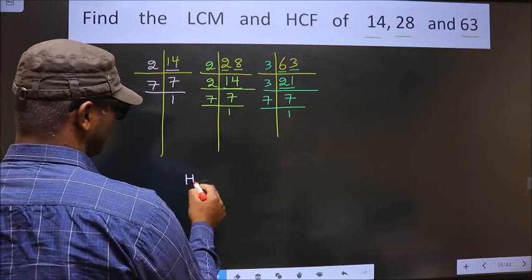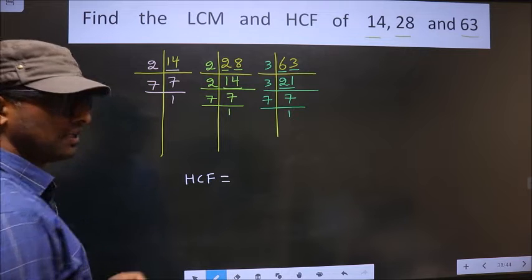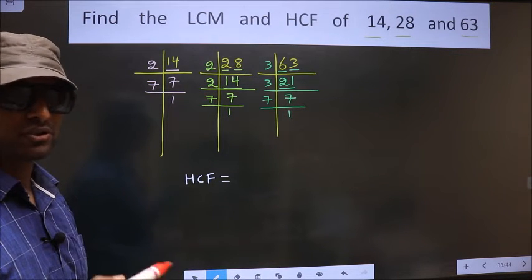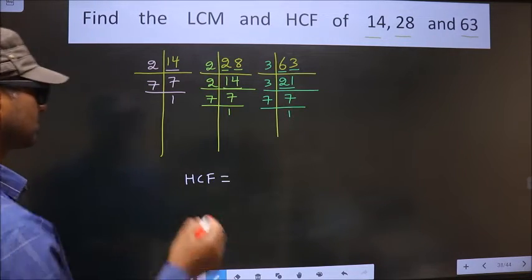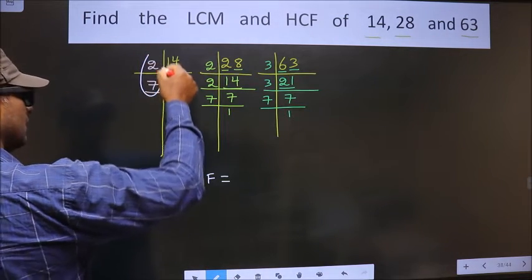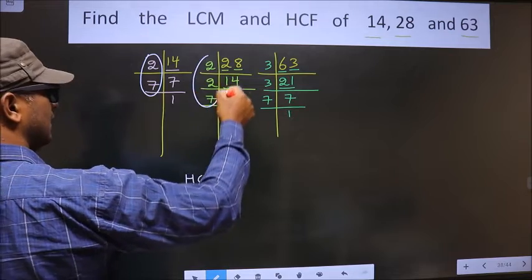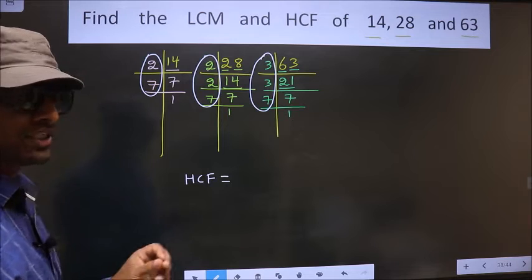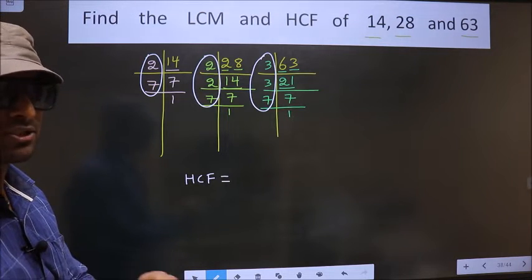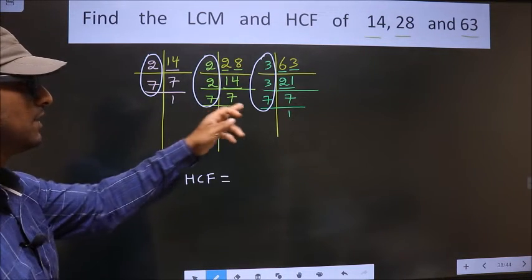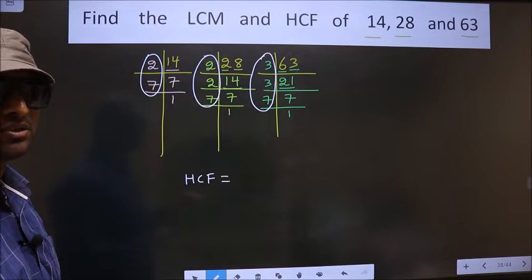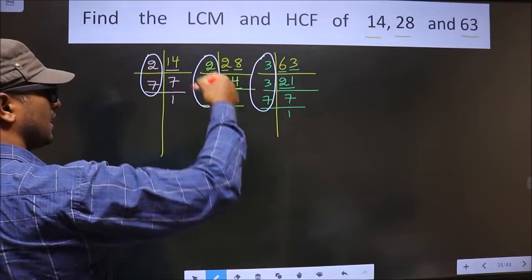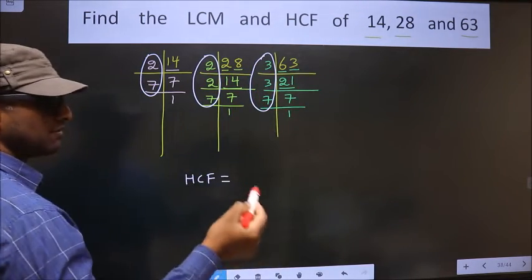So now our HCF is the product of numbers, of those numbers which should be present here, and here, and also here. So now we should find the numbers which should be present in these 3 places. I repeat, we should find the numbers which should be present here, here, and also here. So let us find.